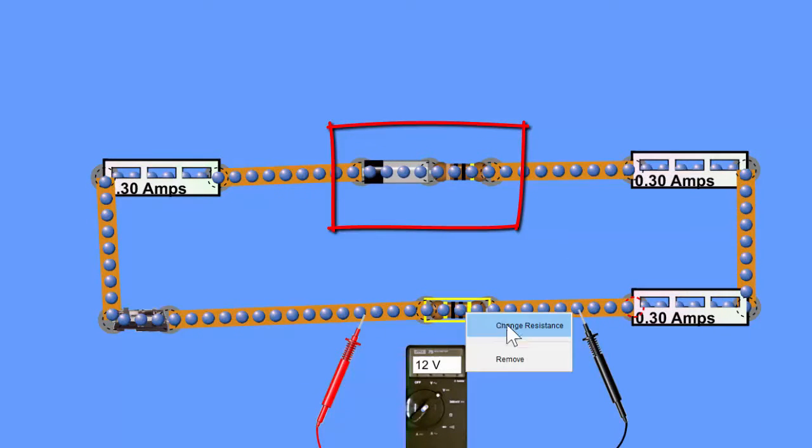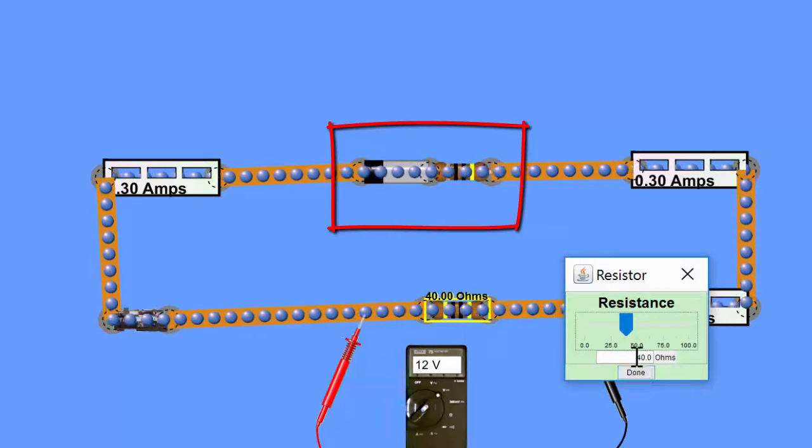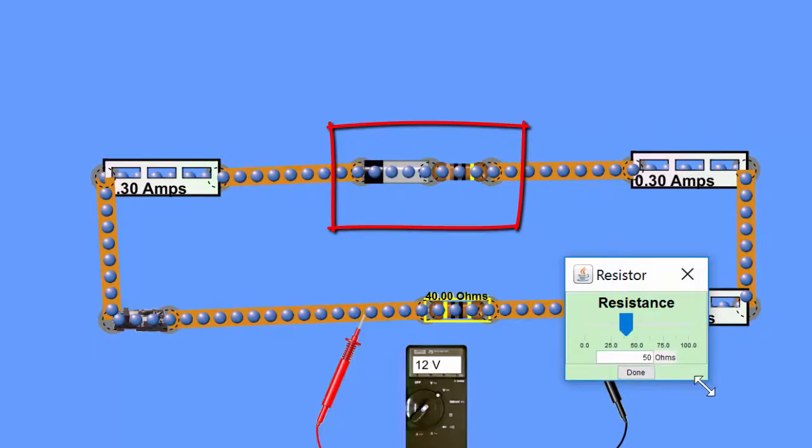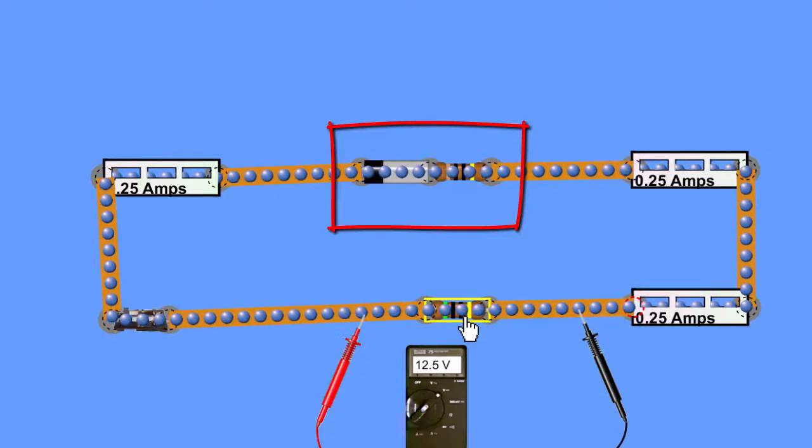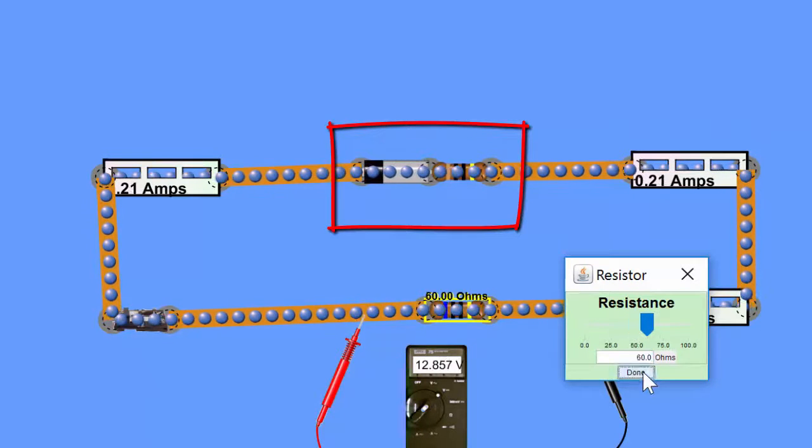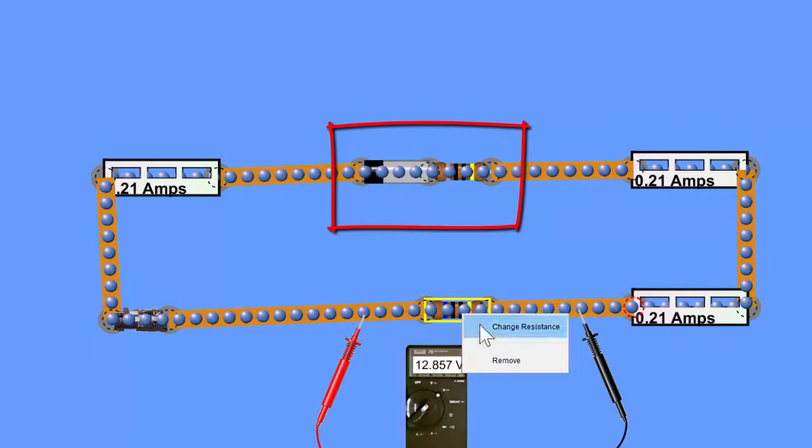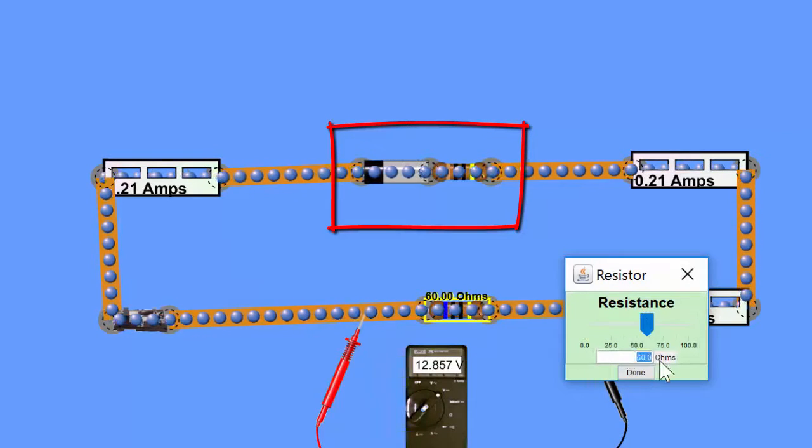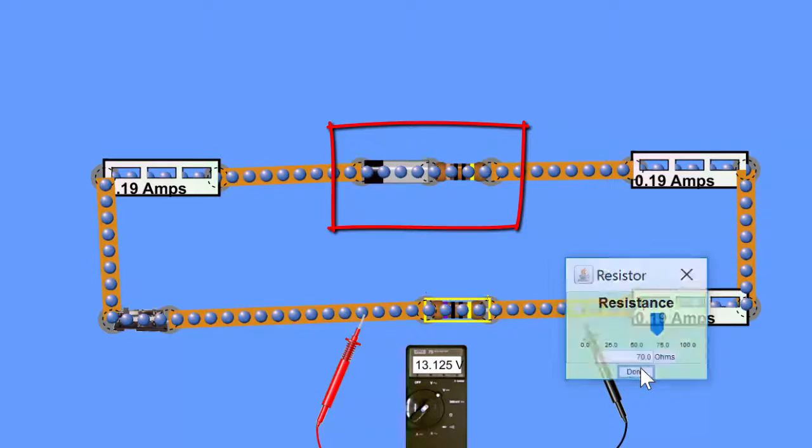And the larger that external resistance got, the closer that resistance would be to the EMF of the cell. So here I've got up to 50 ohms. So the voltmeter was originally reading 7.5 volts, and now we're at 12.857, and it's going to continue to go up.